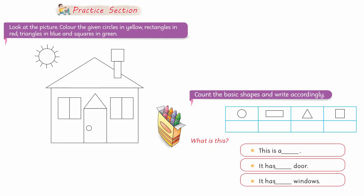Next there is another activity in the practice section: look at the picture, color the given circles in yellow, rectangles in red, triangles in blue, and squares in green. In this picture, the round shape is a circle — color it yellow. Color rectangles in red — this is a rectangle, this is a rectangle, this is a rectangle — all in red.